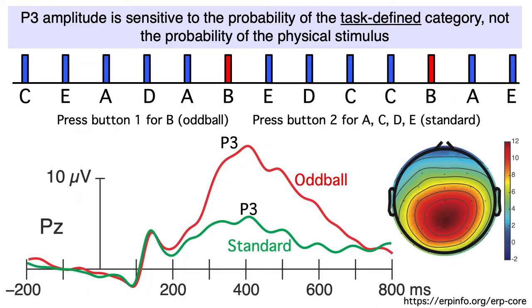In the ERP core, for example, we got a bigger P3 for the target letter B than for the standard letters, even though each individual letter — A, B, C, D, and E — appeared on 20% of trials.